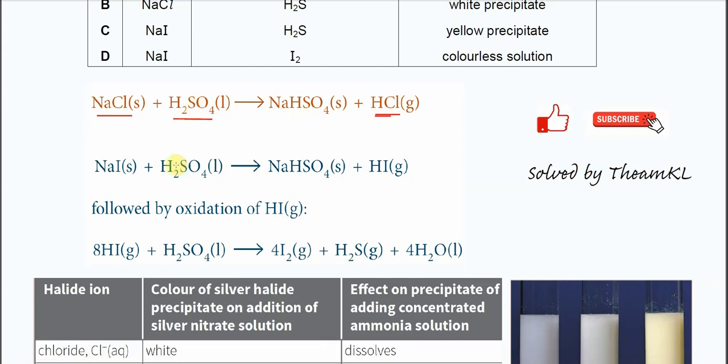For the sodium iodide, it will react with the concentrated sulfuric acid to form the same salt NaHSO4 and it forms the HI. So the difference between HCl and HI is the bond length and the bond energy. Because the bond length in the HCl is shorter, it's stronger and is harder to break. So that's why this one will not further react with the H2SO4.